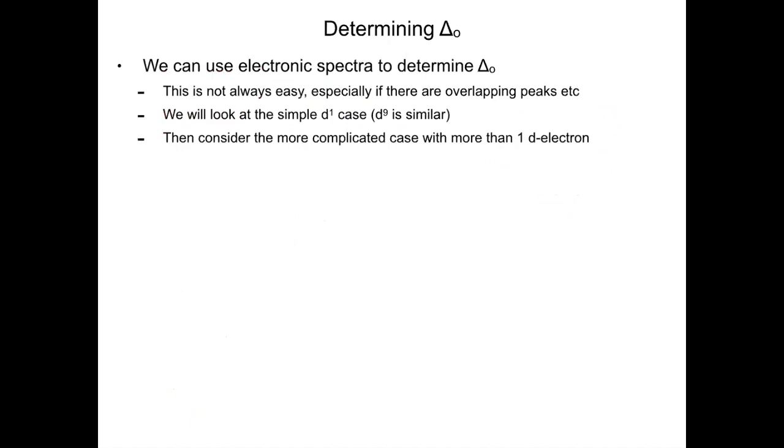The last thing we want to learn how to do is to determine what delta octahedral is. This is not always easy, especially if there's overlapping peaks. We're going to look at two different cases in this lecture. We will look at the simplest case where we have a D1 complex. The D9 complex would be very similar. Then we'll look at the more complicated case where you have more than one D electron.